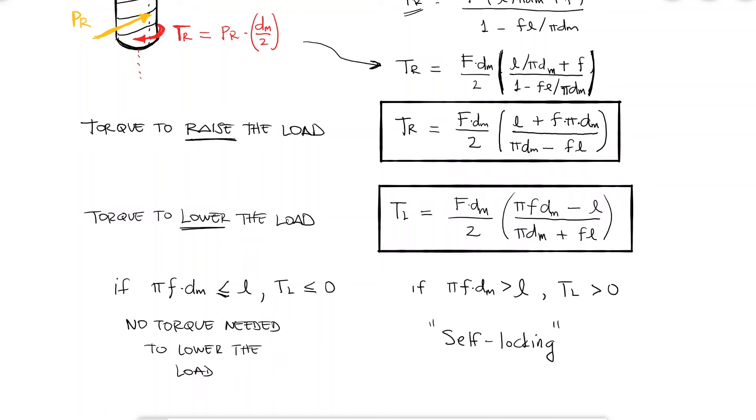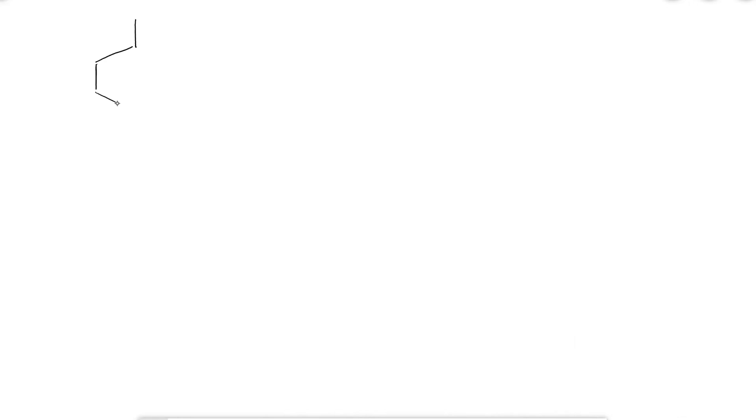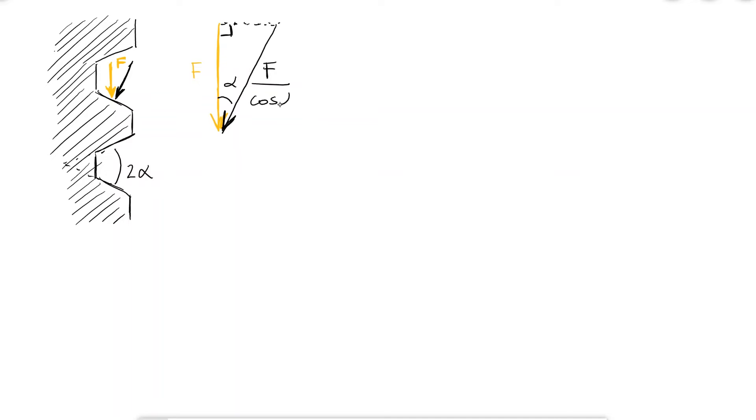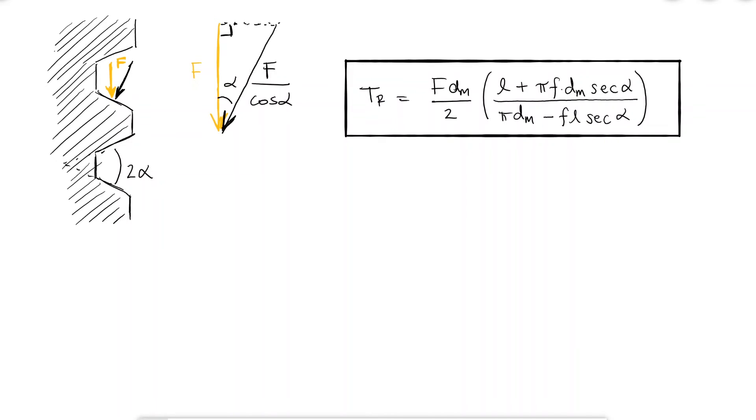All of this is assuming a square thread profile. For any thread profile that results in a slanted surface of contact between the nut and the screw, like the ACME profile, the force f representing the load would be the vertical component of the actual interaction force between the nut and the screw, f over cosine of alpha. This would result in a slight modification to the expression we found, with a new secant of alpha term in it, which is the more general expression that we will always use including an alpha equal to zero for square threads, which is basically the previous expression we derived.